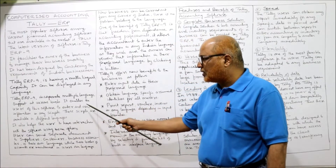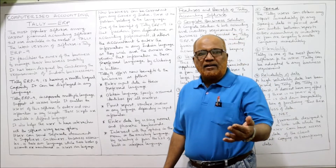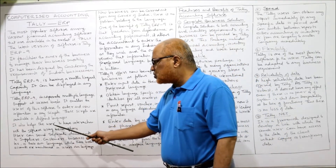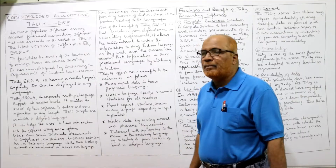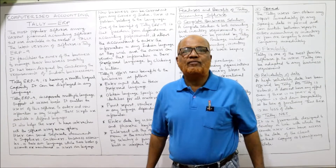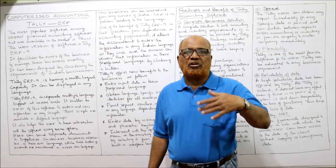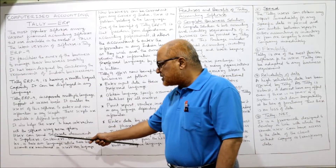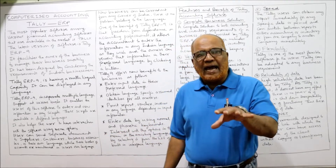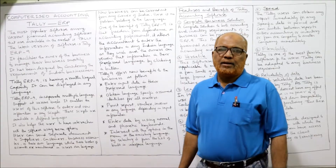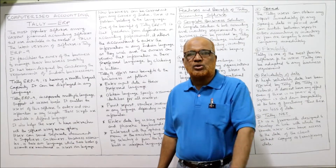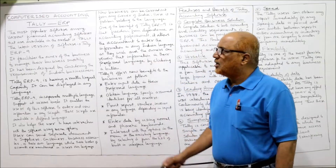Tally ERP 9 enables the user to enter and view information in any script. It also helps the user to interact with the software using drop-down menu options to enter, view, retrieve, and save information. The user can send separate documents to suppliers, customers, and business associates in their own language, while entering data in his own language.